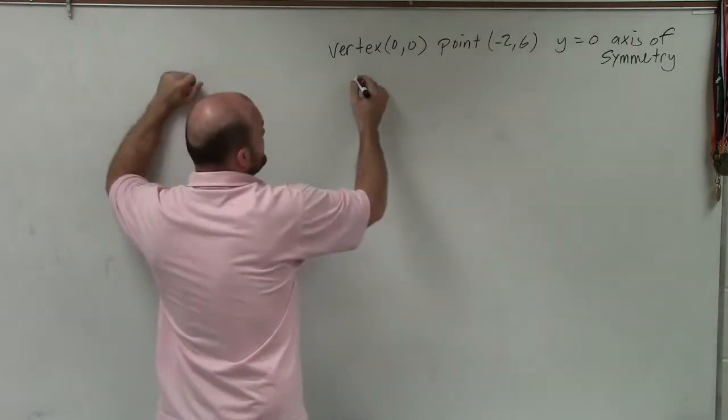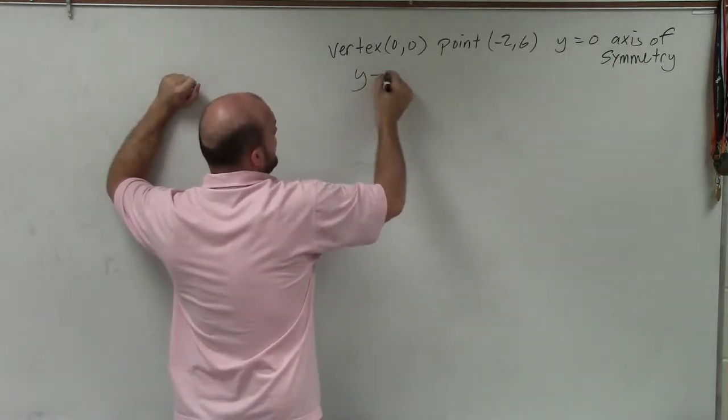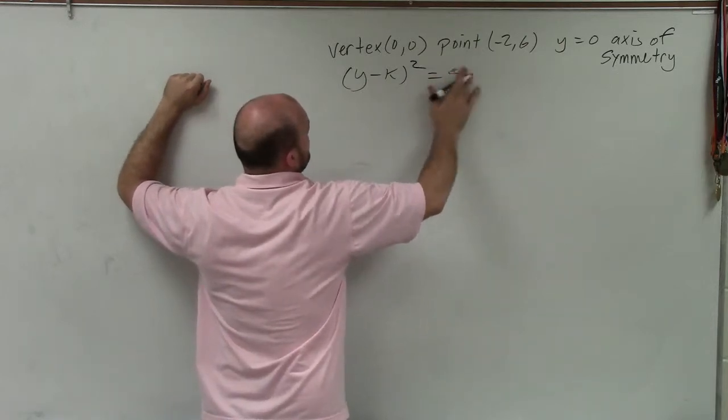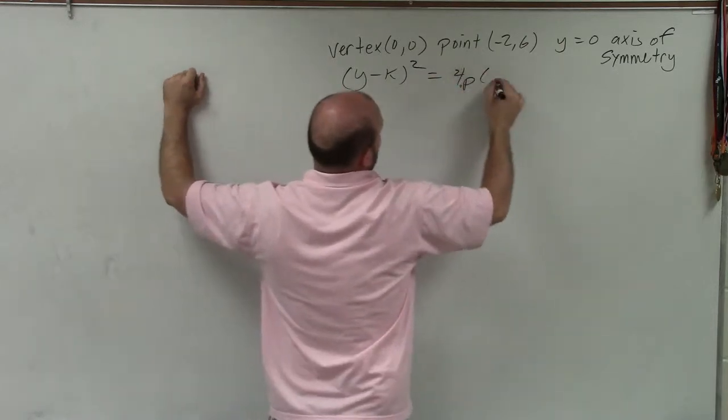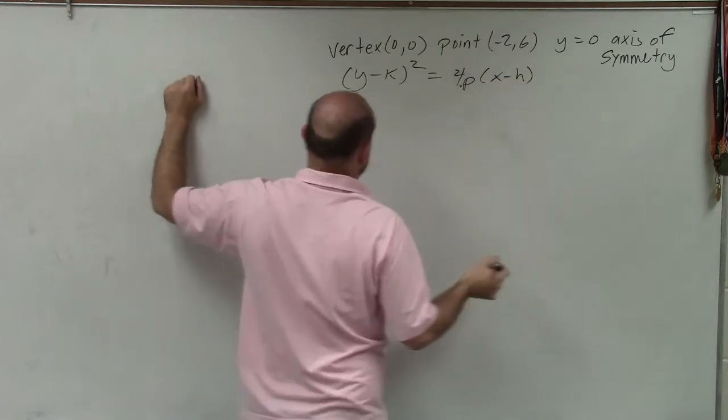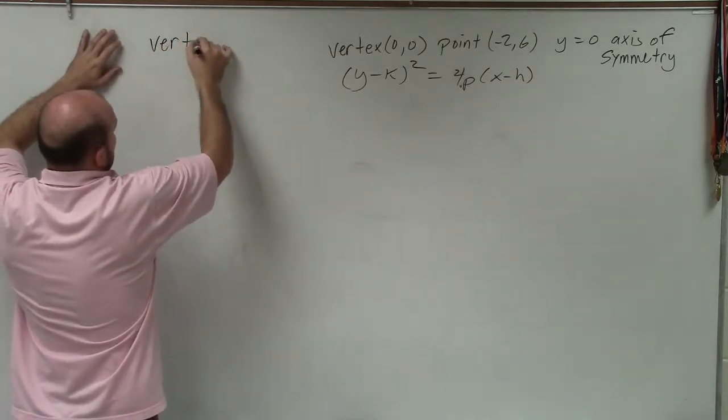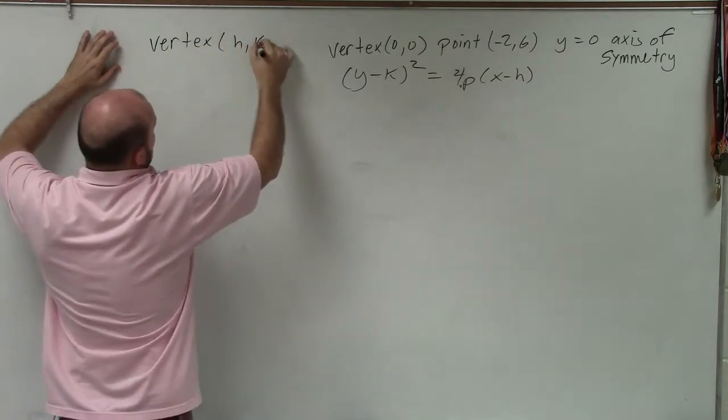And I can then use this equation, y minus k squared equals 4p times x minus h. Now, what's nice about that is I know that the vertex is in the form of h, k.